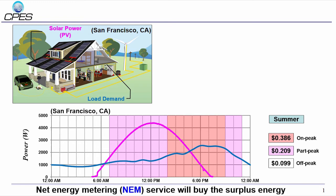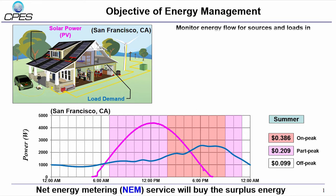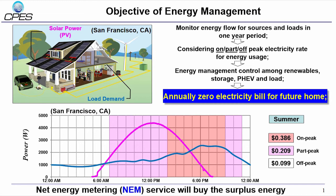In the given electricity rate schedule, the on-peak hour is from 2pm to 9pm, shown in the pink shaded area and the corresponding electricity rate is around 40 cents. Part peak time has two sections with a price of 20 cents per kilowatt hour. All the other time are off-peak hours. Utility company will buy the surplus energy and credit the customer through the net energy metering service. The objective of the energy management is to achieve annually zero electricity bill for future home.